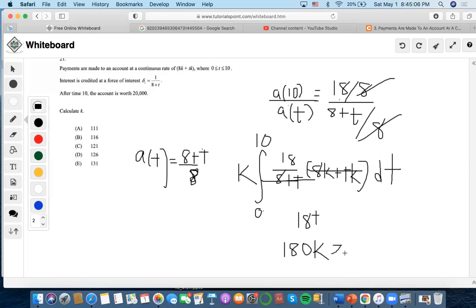Set it equal to 20,000, then we divide 180 by both sides, and we get 111.11, which is a.